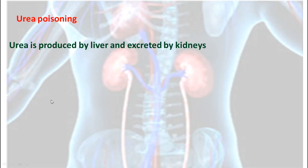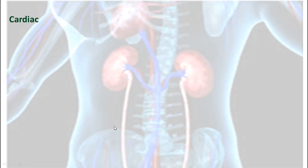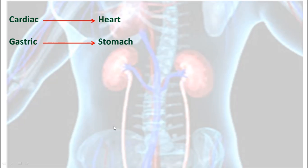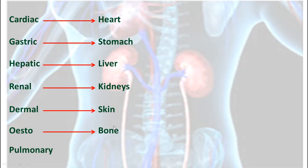Urea is produced by the liver and excreted by the kidneys. In patients with renal failure, kidneys fail to expel urea, causing its accumulation and urea poisoning. Some expressions to know: cardiac refers to the heart, gastric to the stomach, hepatic to the liver, renal to the kidneys, dermal to the skin, osteo to the bone, and pulmonary to the lungs.